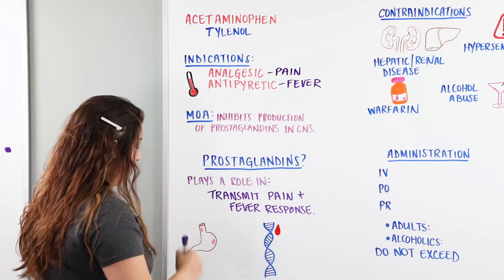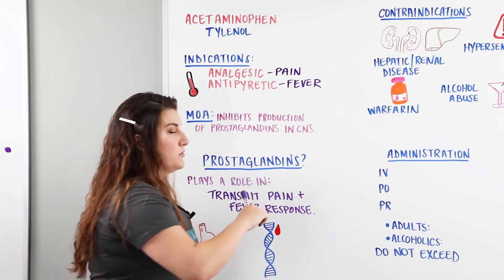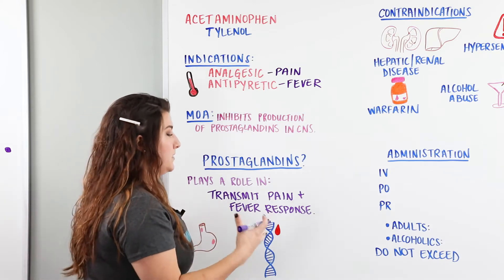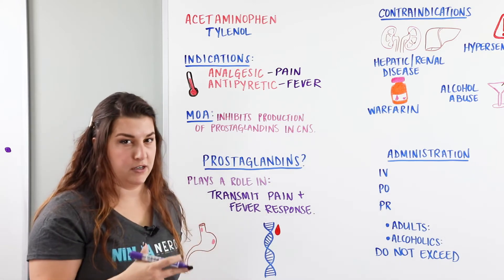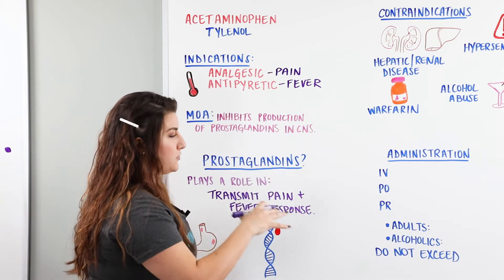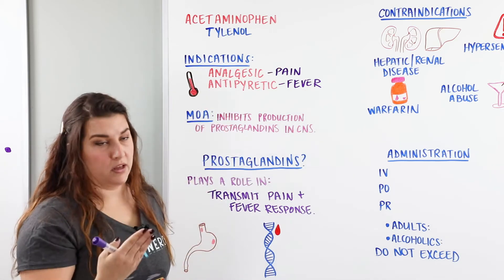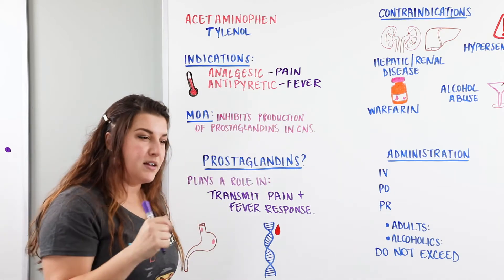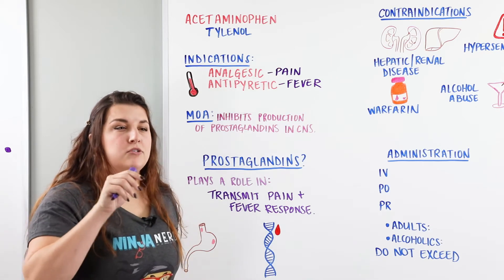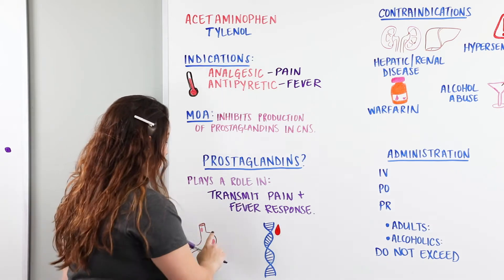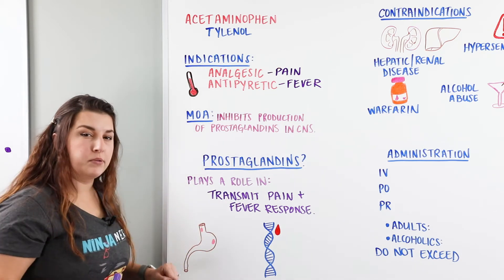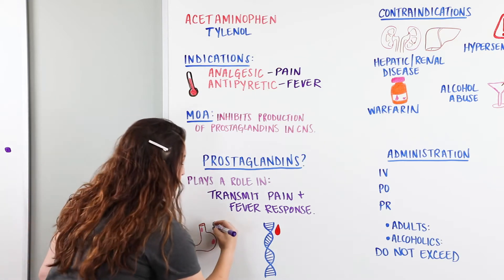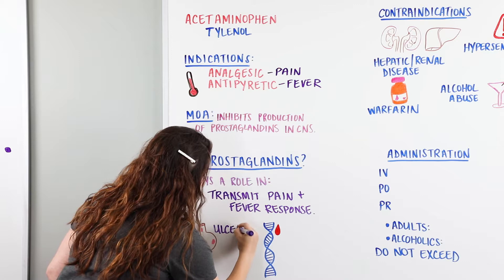Tylenol is typically used as an alternative to NSAIDs. NSAIDs are a type of pain medication that act on the bleeding cascade and can help thin the blood. We're going to look at Tylenol for somebody who has some type of bleeding disorder. Patients with peptic or gastric ulcers are good candidates for Tylenol — giving Tylenol to a patient who has ulcers is a good choice.